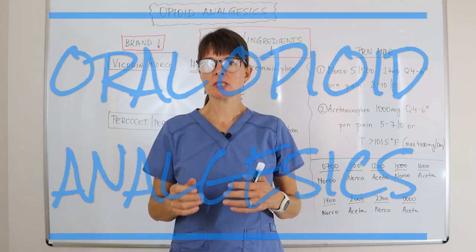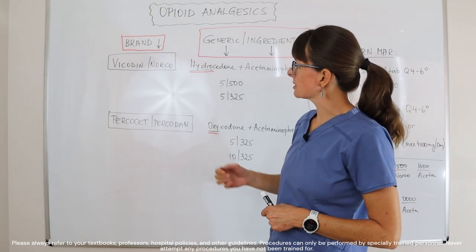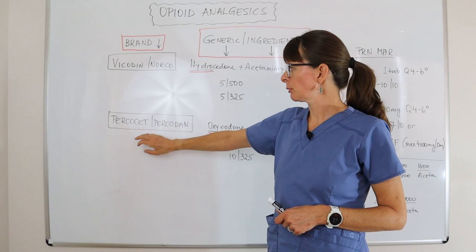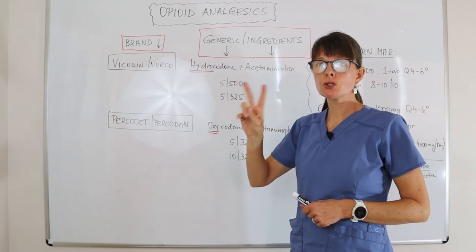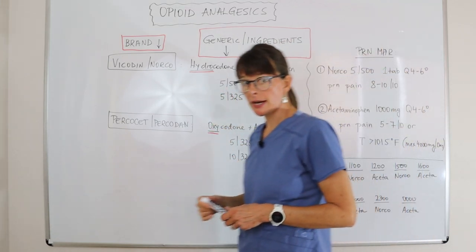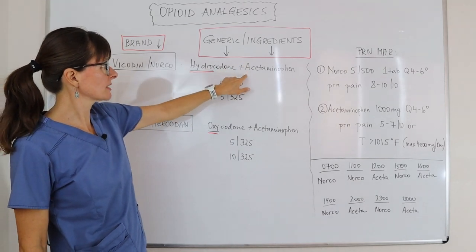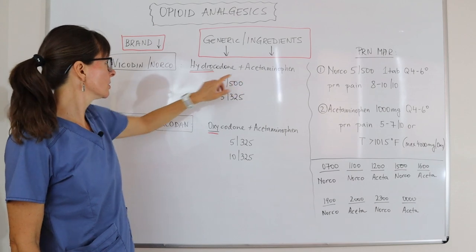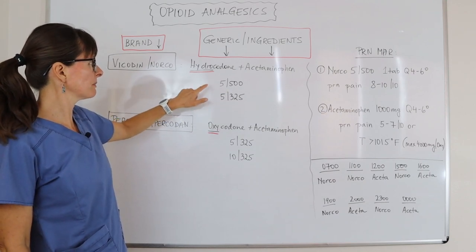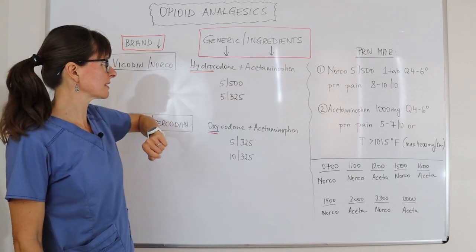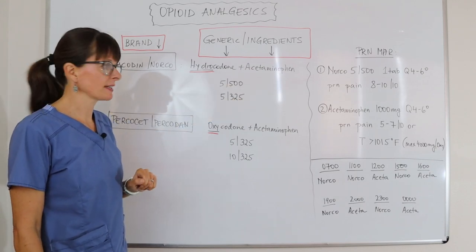First, we have to distinguish between brand and generic names. The most commonly seen opioid analgesics go by the brand names Vicodin or Norco, and Percocet or Percodan. Norco and Vicodin consist of two medications: the generic opioid is hydrocodone, and it also contains acetaminophen, which is Tylenol. For example, Norco 5-500 means 5 milligrams hydrocodone and 500 milligrams acetaminophen, or 5-325 means 5 milligrams hydrocodone and 325 milligrams acetaminophen.